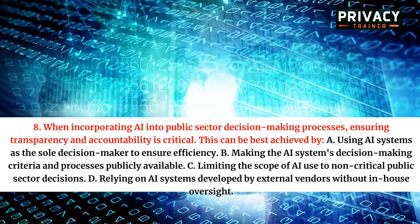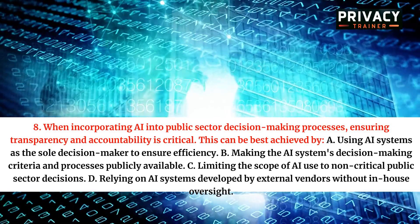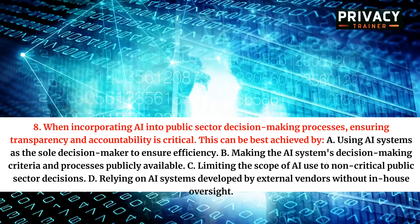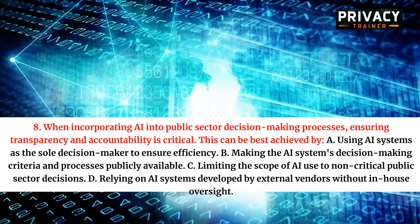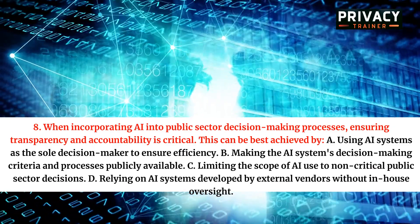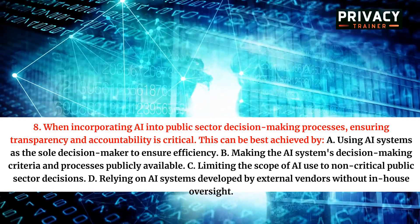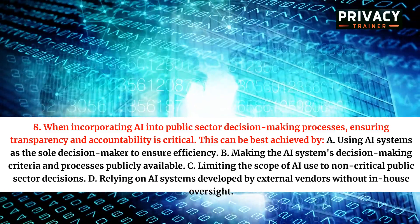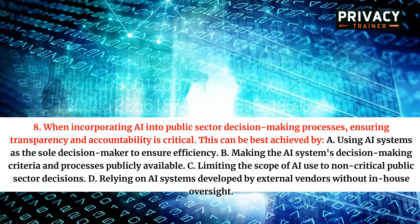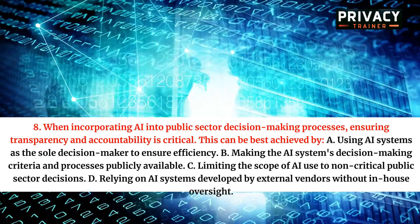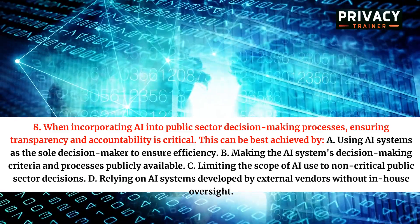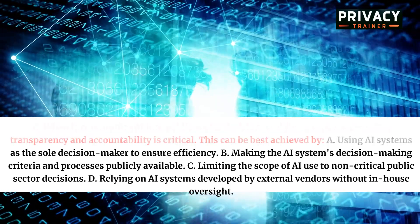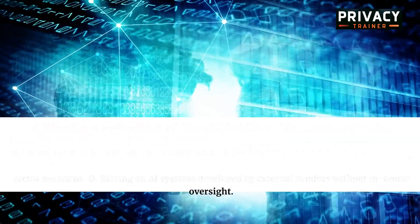Question 8. When incorporating AI into public sector decision-making processes, ensuring transparency and accountability is critical. This can be best achieved by: A. Using AI systems as the sole decision-maker to ensure efficiency. B. Making the AI system's decision-making criteria and processes publicly available. C. Limiting the scope of AI use to non-critical public sector decisions. D. Relying on AI systems developed by external vendors without in-house oversight.